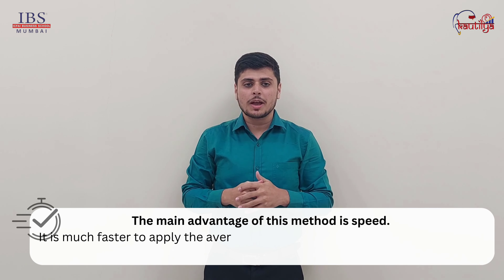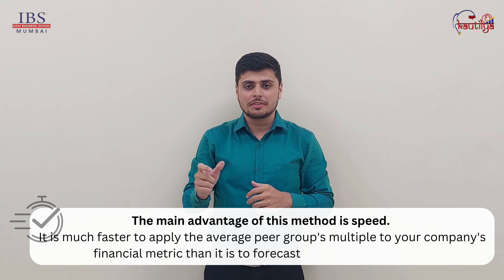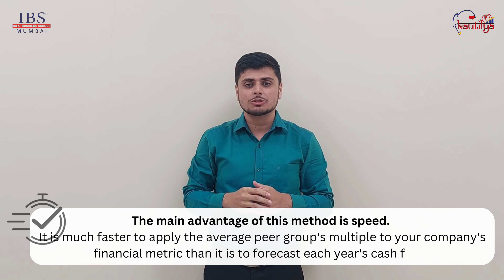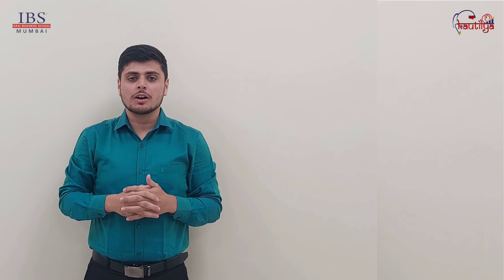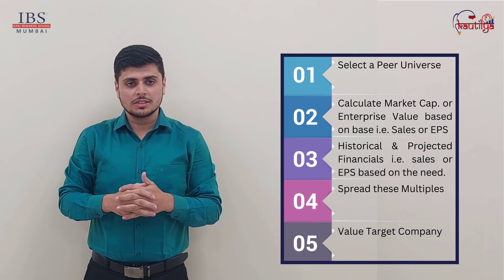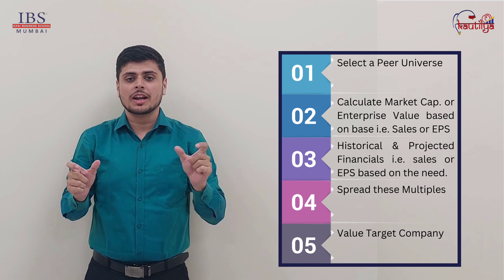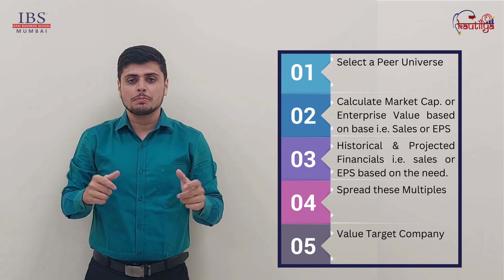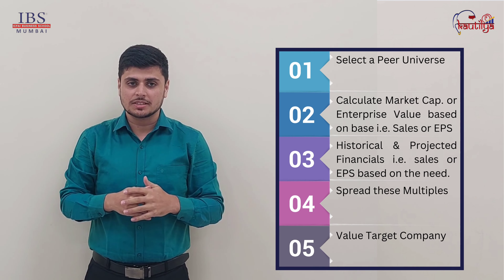It is much faster to apply the average peer group multiple to your company's financial metrics than it is to forecast each year's cash flows. Steps to remember for executing a comps valuation: first, select a peer universe, then calculate the market capitalization or enterprise value based on the base — i.e., sales or EPS.